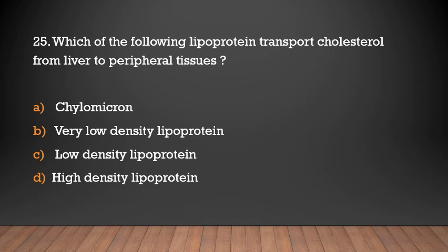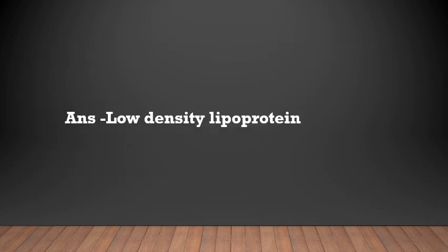Which of the following lipoproteins transports cholesterol from the liver to peripheral tissues? Options: Chylomicrons, very low density lipoprotein, low density lipoprotein, high density lipoprotein. Answer: Low density lipoprotein — it transmits cholesterol from the liver to peripheral tissues.